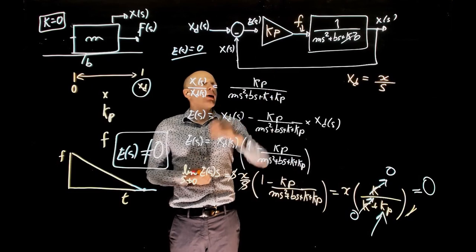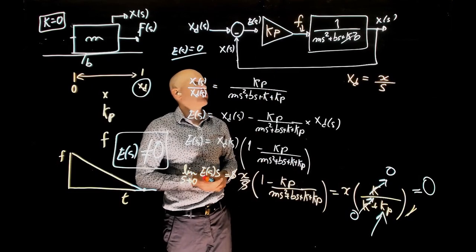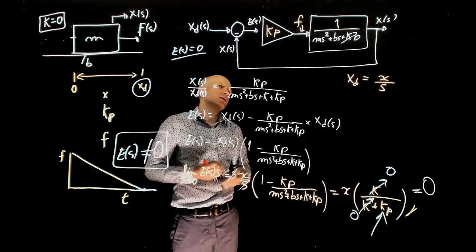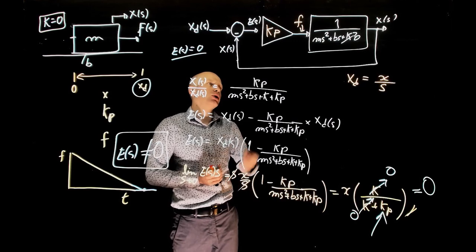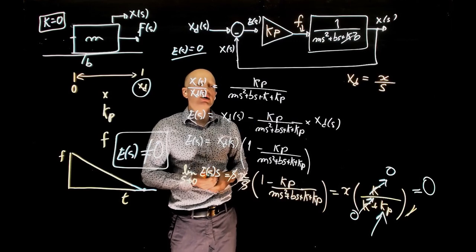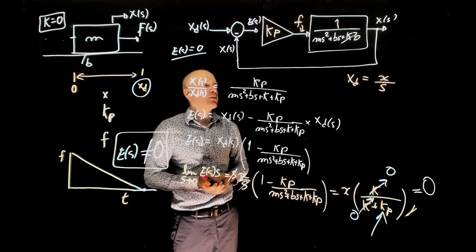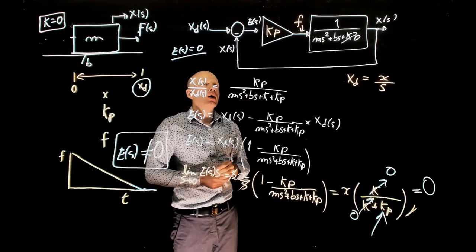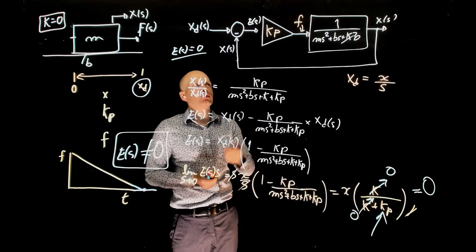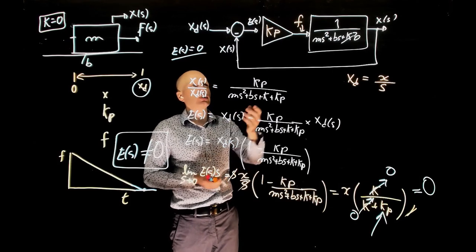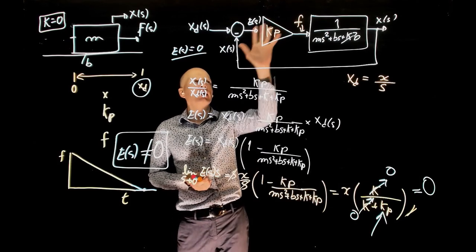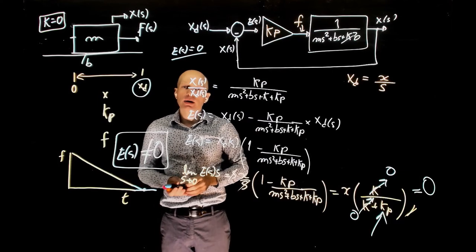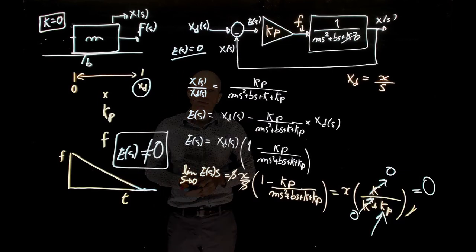So did we choose a bad controller for our mass-spring-damper system? Not necessarily — this is a decent controller and the steady-state error can be made very small. We can fix this issue using a different controller. The solution would be to add an integral controller, but we'll deal with that in a separate lecture.